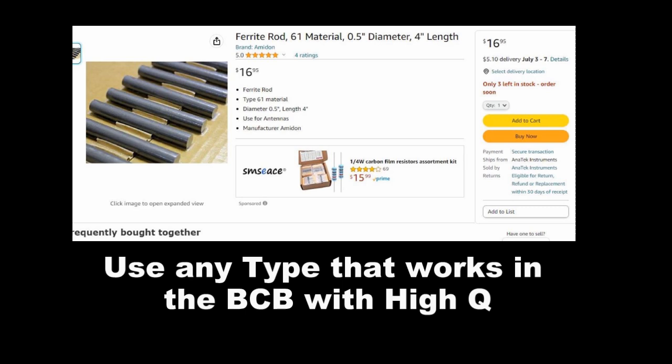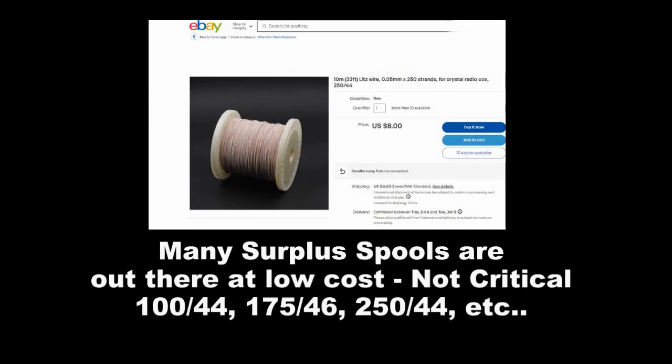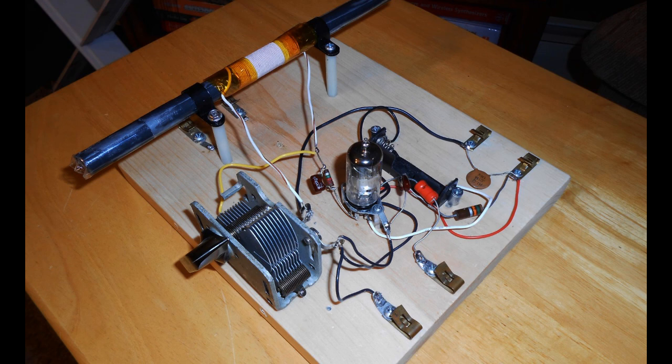When you're working with the ferrite rods, remember to wrap the rods with some good packing tape or some other type of tape that's going to give it some protection from cracking and dropping it accidentally on the table. I always wrap mine with a couple of layers of tape just for that purpose.